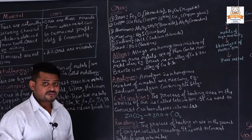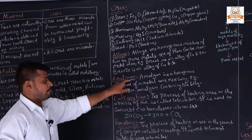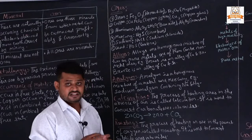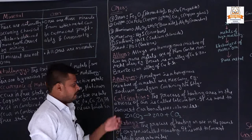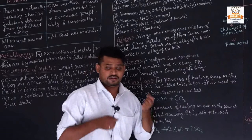Amalgam is a homogeneous mixture of a metal and mercury. When a metal and mercury are mixed with each other, they form an amalgam. For example, sodium amalgam contains sodium (Na) and mercury (Hg).